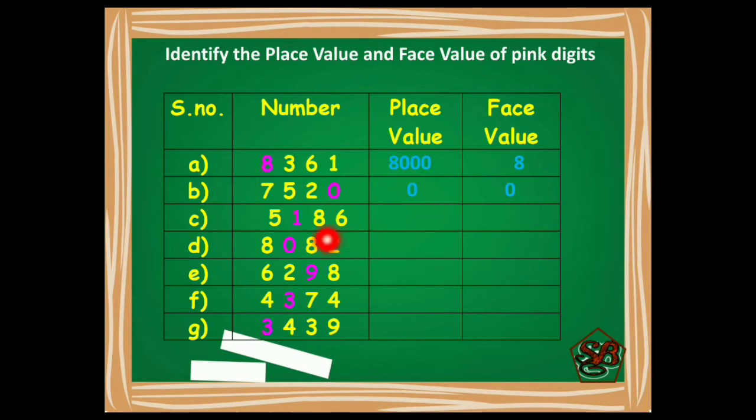Would you like to try this one? So let's start doing it. With marking places: 1's, 10's, 100's. Now here 1 is at 100's place, so the place value is 100 and the face value will be 1 only. Very good.